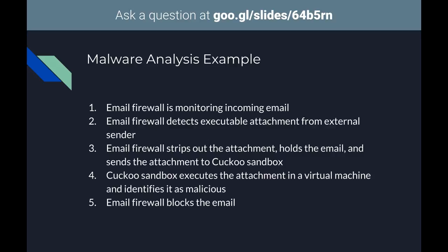An example of how this works: you have an email firewall sitting there looking at all your email traffic. You see an executable attachment from an external source — generally not good. Instead of blocking it outright, a lot of systems strip the attachment and send it to a malware analysis platform like FireEye or Cuckoo Sandbox. These solutions spin up a virtual machine, execute the malware, and figure out what it did — file system changes, network calls, etc. — and provide a report on whether it was malicious. Some cool solutions even let you click on the detonated malware and watch it execute in the VM, done securely.